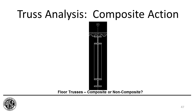Another question is whether to consider composite action between the slab and the top chord in compression. We certainly can. Sometimes we rely only on the bare steel, and sometimes we take advantage of the composite action. What's really important is that if you are taking advantage of composite action, that must be clearly communicated in the drawings — because cutting an opening near that truss in the future would compromise the load-carrying capacity, just as in any composite floor system design.